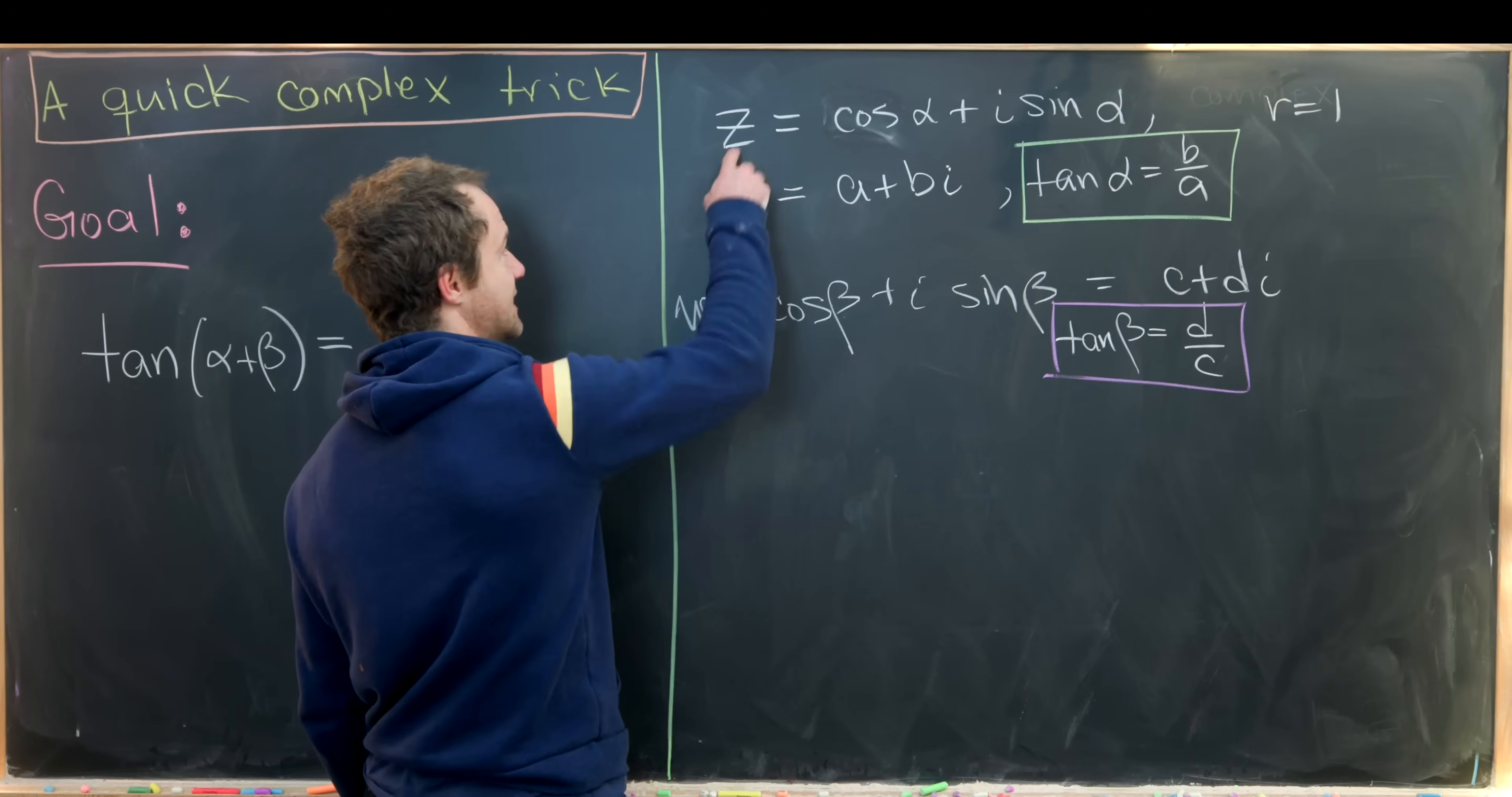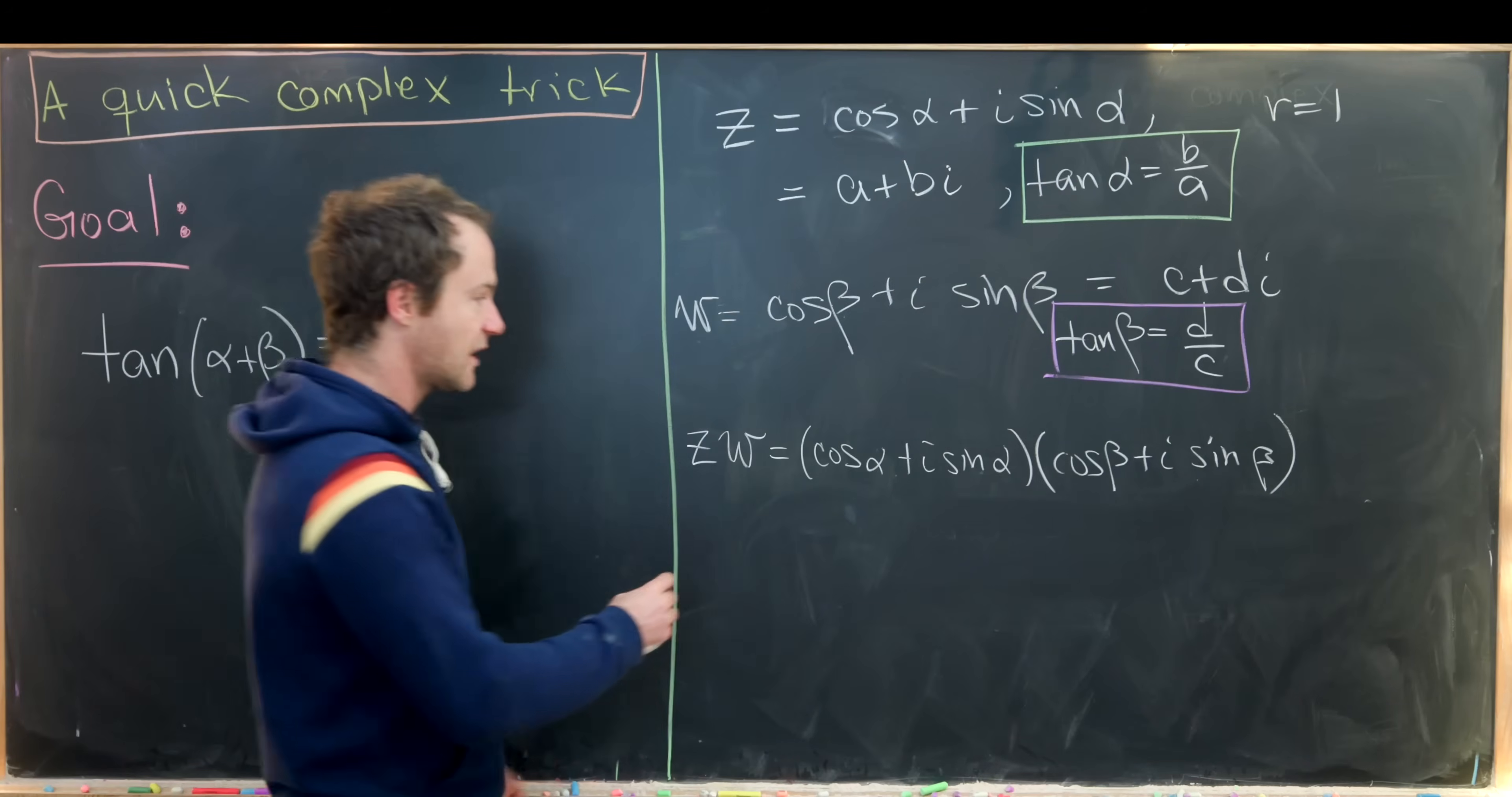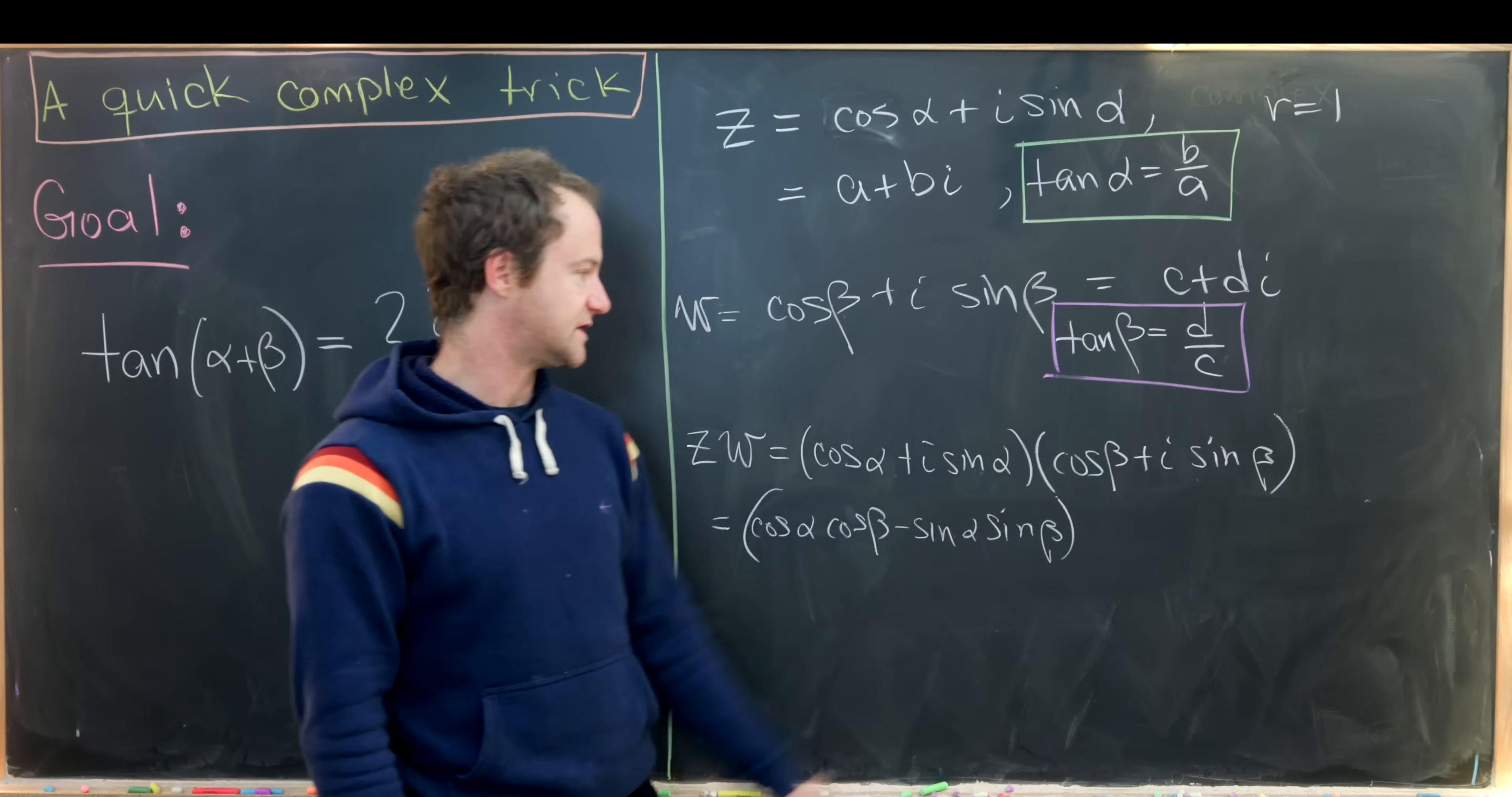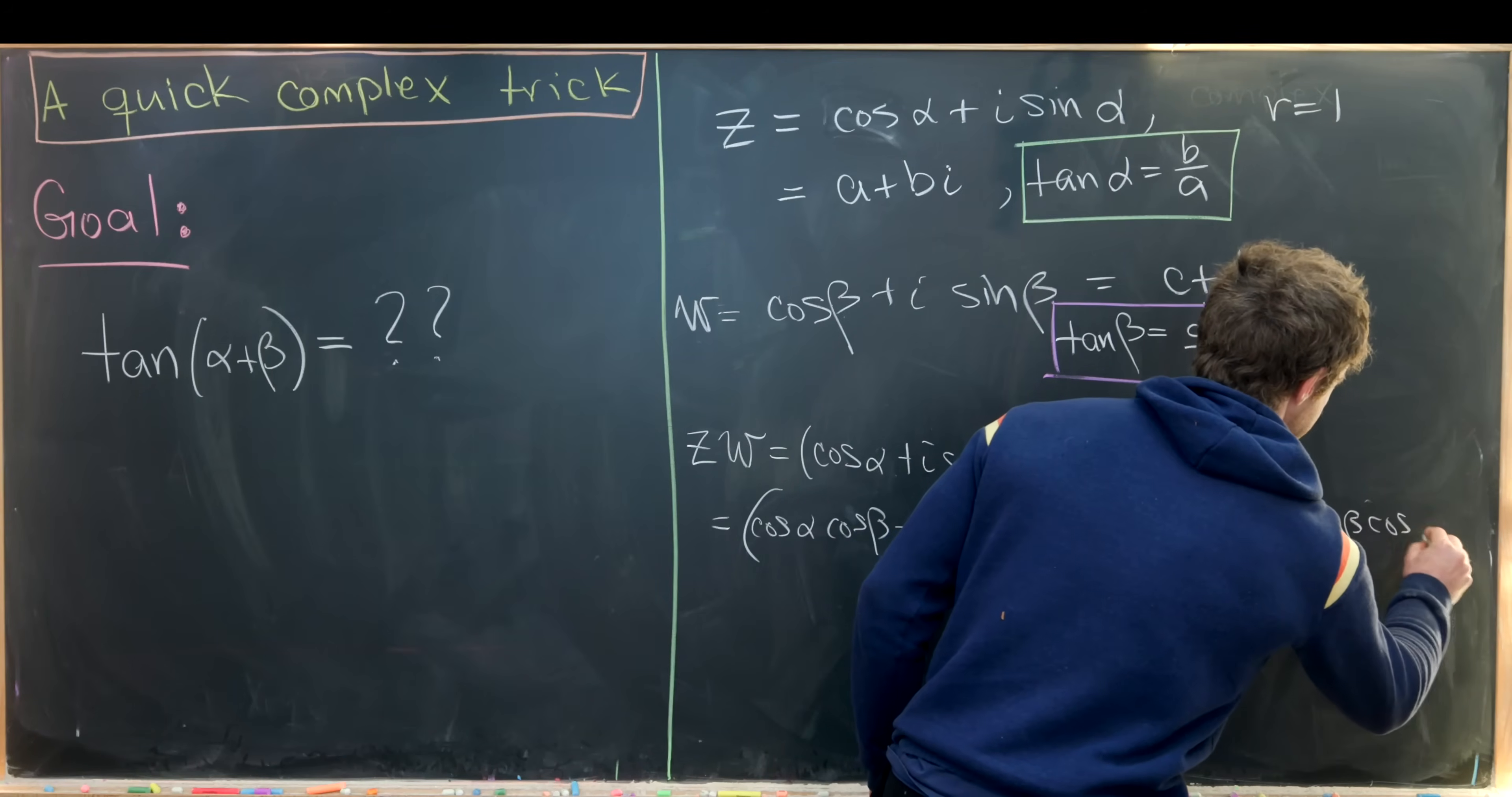So let's work towards that. Let's take the product of these two numbers z and w. So that'll give us cosine alpha plus i times sine alpha, and then we'll have cosine beta plus i times sine of beta. So carefully multiplying this out will give us cos alpha cos beta minus sine alpha sine beta. That's what we get from multiplying these two cosines and multiplying these two sines using the fact that i times i is negative one. Then for our imaginary part, we'll have plus i times, let's see, sine alpha cos beta plus sine beta cosine alpha.